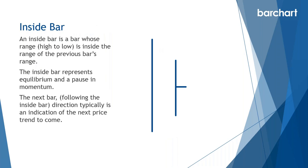The first pattern we're going to look at is called an inside bar. An inside bar is one whose range — its high to low — is inside the previous bar's range. They typically represent a pause in price before a continuation. When price moves above the inside bar, that is usually an indication that the direction will continue up. If price moves below the inside bar, that is usually an indication that price will continue in the down direction.